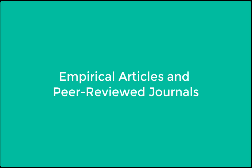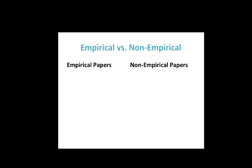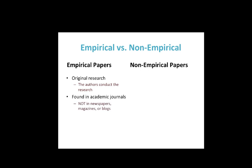First, what is an empirical versus a non-empirical paper? Empirical papers offer original research. The author or authors of the article conducted the study. Empirical papers are found in academic journals. They're not found in newspapers, magazines, or blogs.